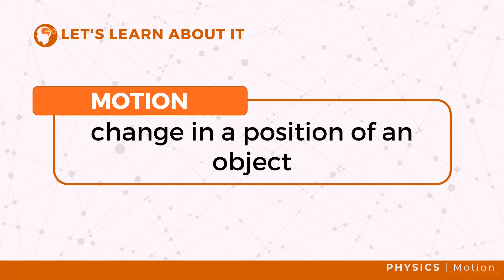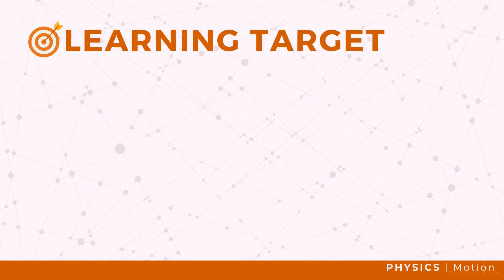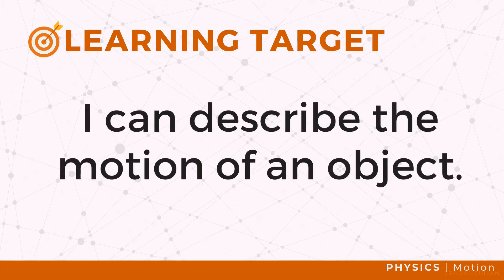That is, for an object to be in motion, it must change its position or move from its initial position to a final position. How do we scientifically describe the motion of an object?